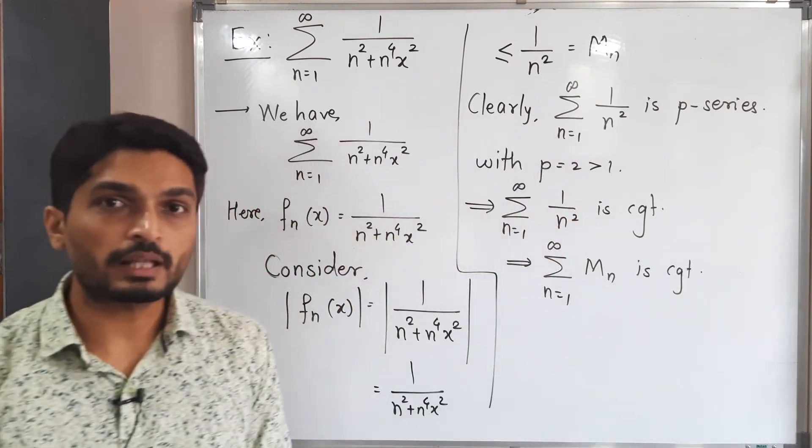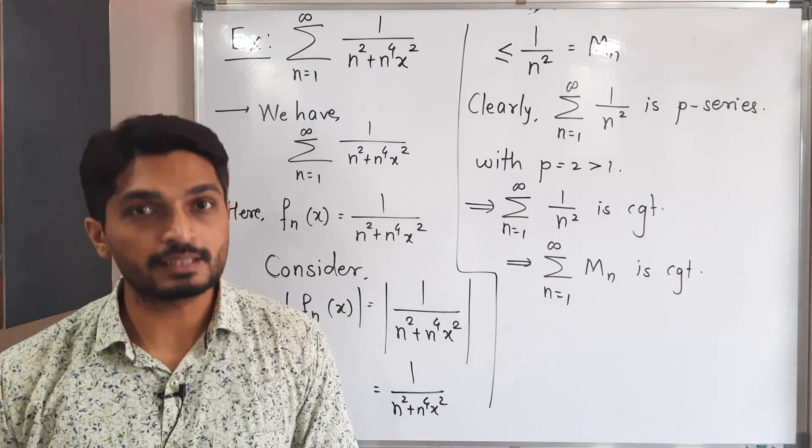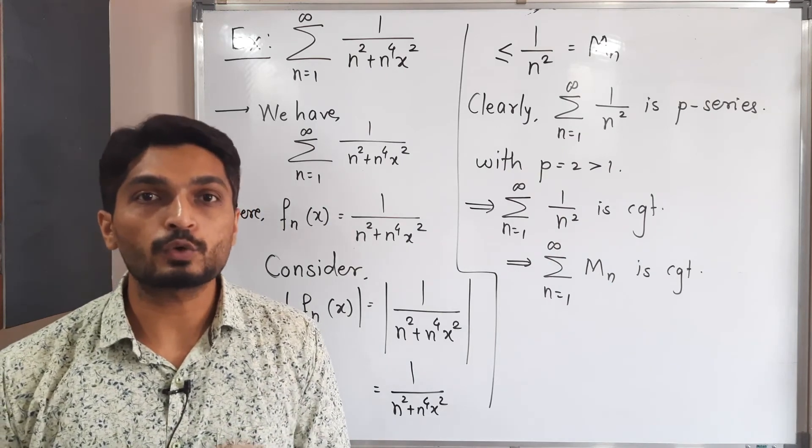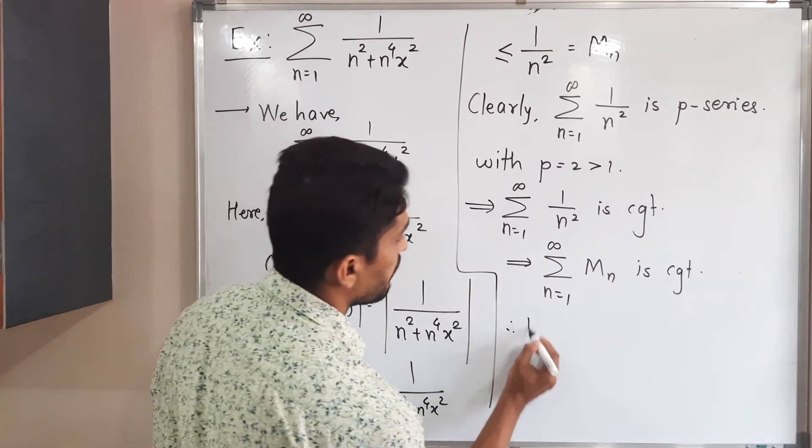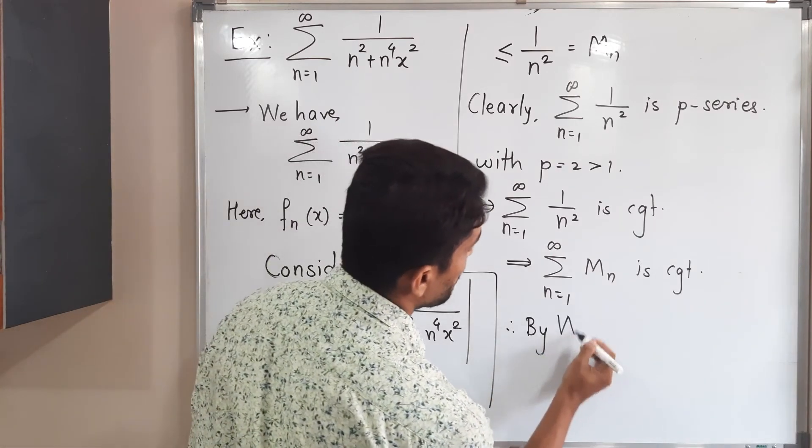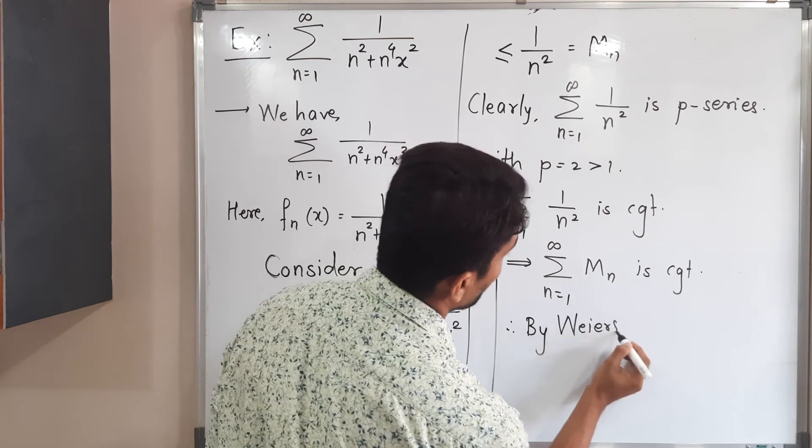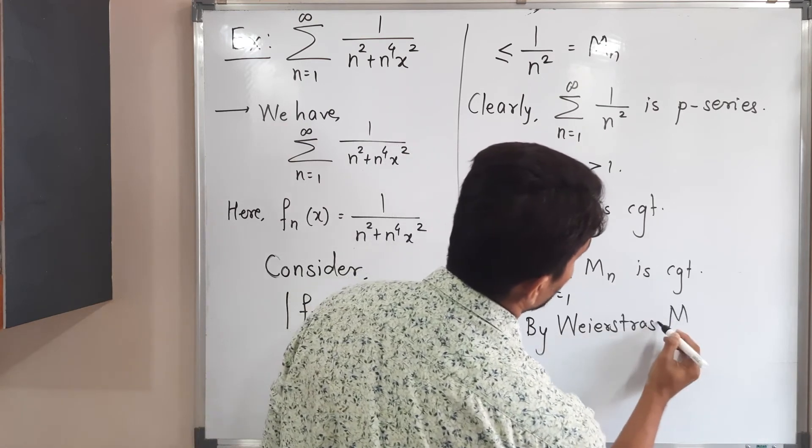So if summation mn is convergent series, Weierstrass M test says given series of function converges uniformly. So therefore by Weierstrass M test,